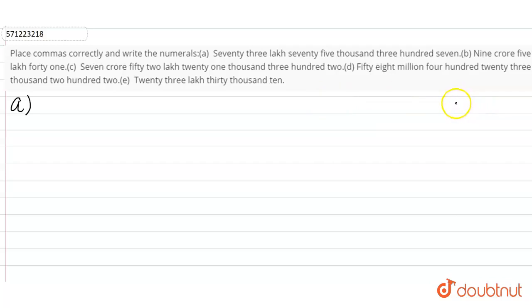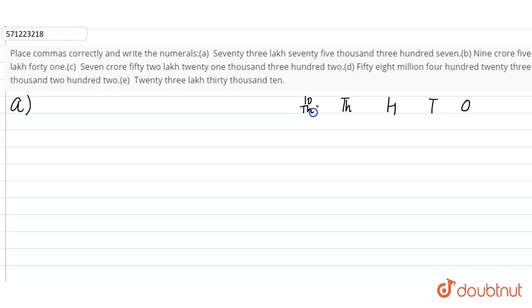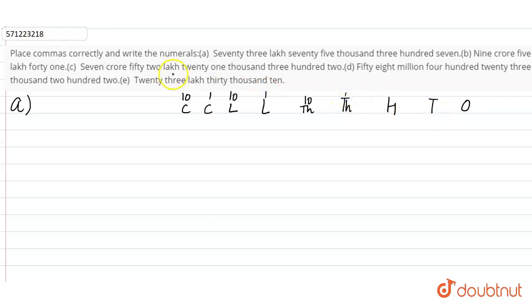Firstly, let's write the place value columns: 1s, 10s, 100s, 1000, 10,000, lakhs, 10 lakhs, crore, and 10 crore. So we have 1 lakh, 10 lakh, 1000 — like this.